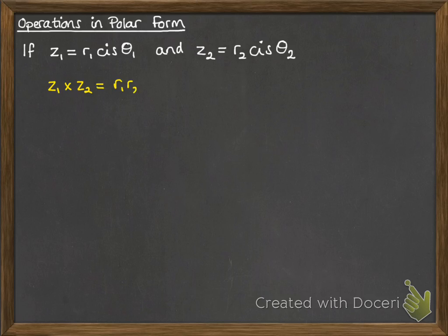Now if we want to times them together, then we get this result where the modulus gets multiplied together and the arguments get added together. If you want to see a proof of that, there's one in your textbook. It's not too difficult to follow, but you don't need to reproduce it, so I'm not putting it into the videos.